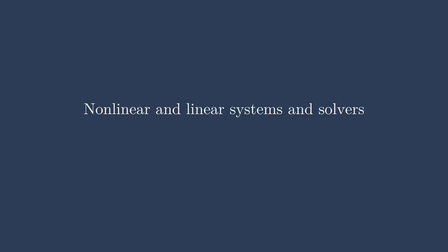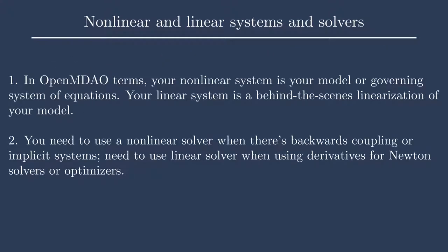Now, this is a doozy of a topic. I normally hate having a main message that is two separate points — I try to keep it to one — but I think it's important here. My first main message is defining what nonlinear and linear systems are. In OpenMDAO terms, your nonlinear system is your model or the governing system of equations — the actual physical processes you're capturing in equations. Your linear system, on the other hand, is a behind-the-scenes linearization of the model, only used to compute derivatives, which are then used for Newton solvers or for optimizers.